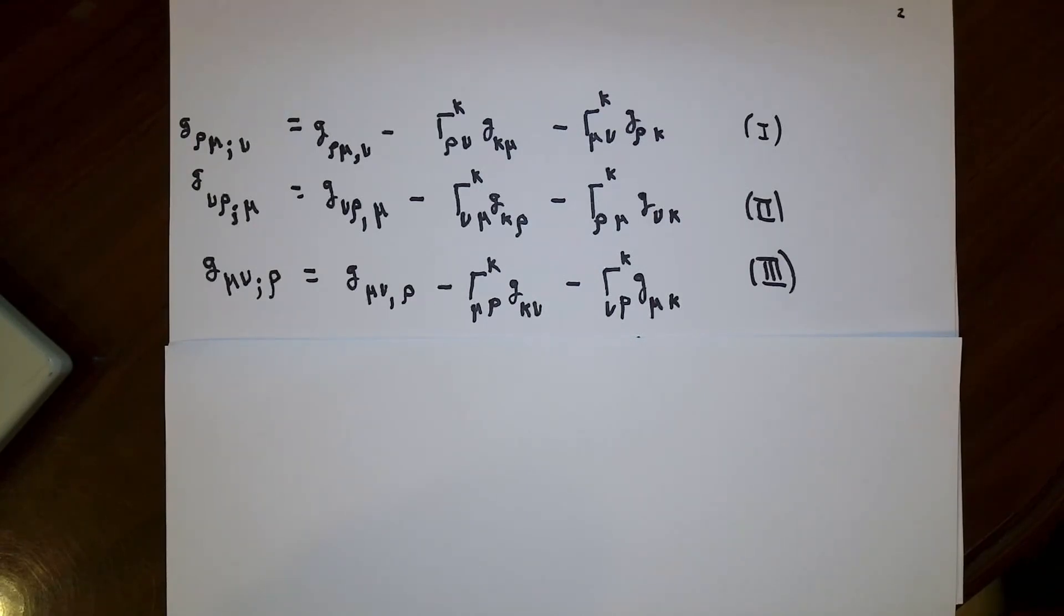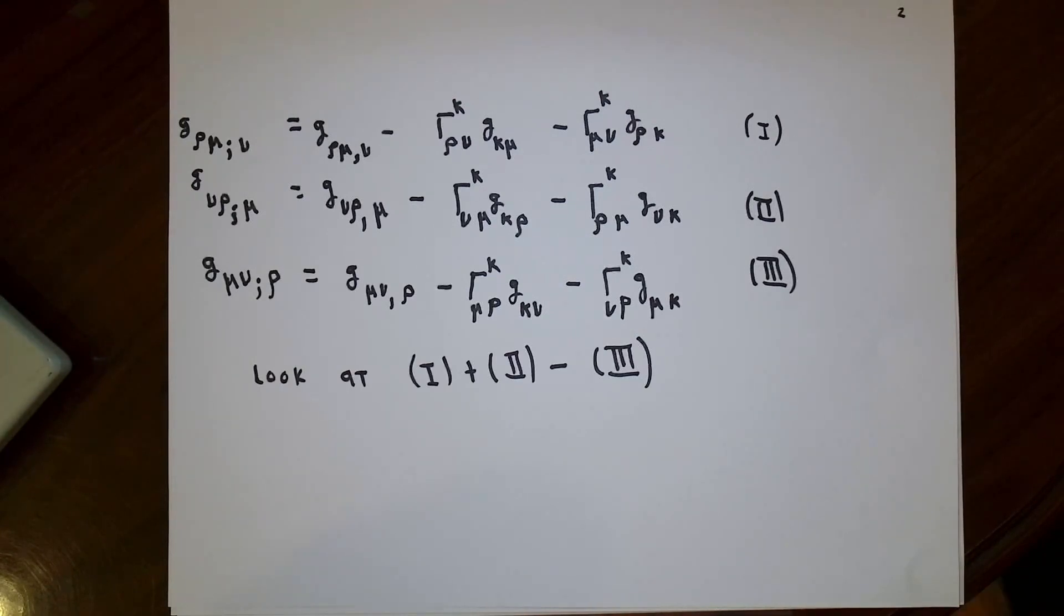The reason that we write things like this is by doing a very sneaky and clever combination of things, we can actually figure out what the Christoffel symbols are in terms of metric tensor components. What we're going to do is I'm going to add the first and second equations together, and then I'm going to subtract the third one. Now this is all going to be very complicated looking, but I'm just going to write these things down literally. There's no deep thought going on here.